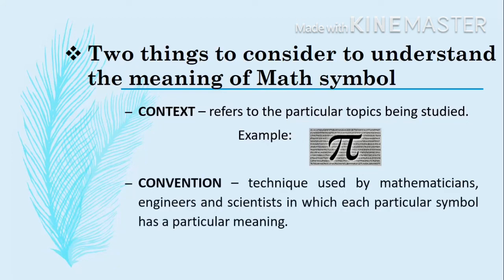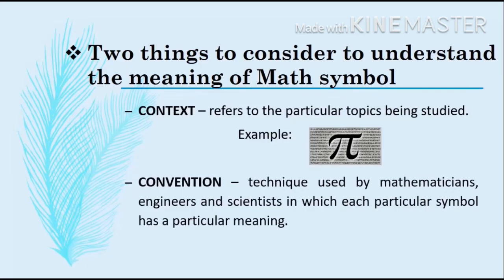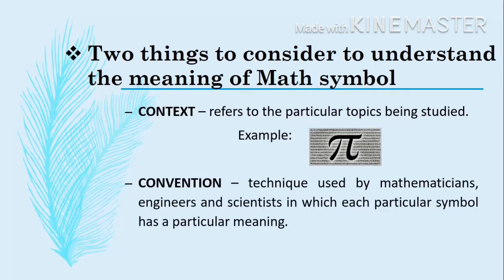The next one is convention — a technique used by mathematicians, engineers, and scientists in which a particular symbol has a particular meaning. In convention, the meaning of a symbol depends on the person using it. For example, student A used the variable X to represent a leg in a triangle, while student B used X to represent the hypotenuse. So in convention, the meaning depends on the person using it, while in context, the meaning of a symbol depends on the topic.